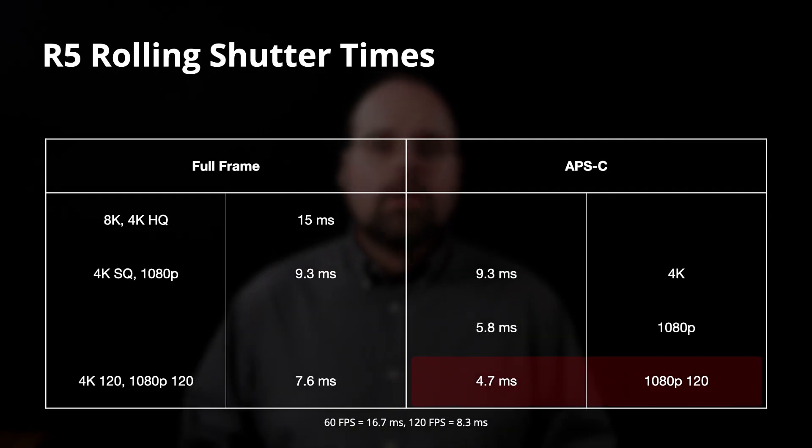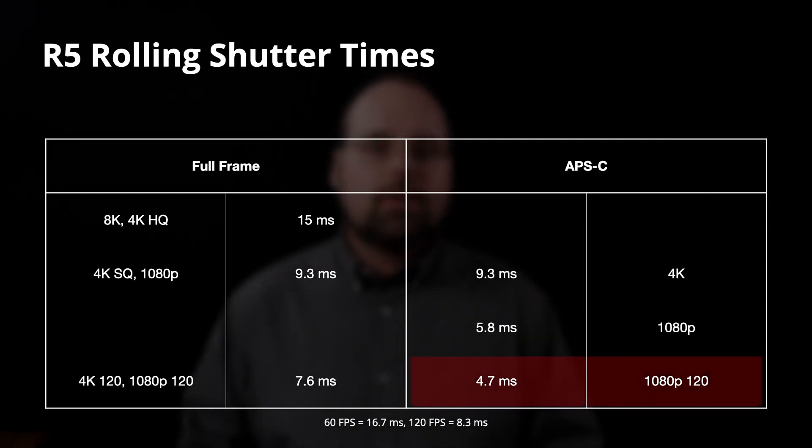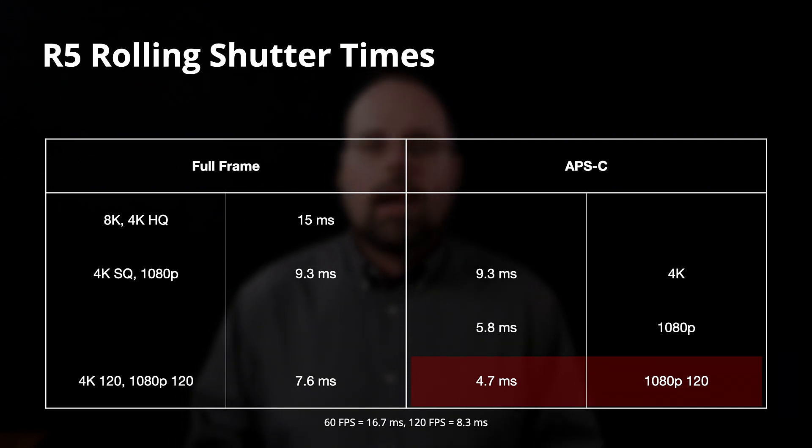7.6 milliseconds is clearly faster than 4K standard quality and is about half of what you'd expect from the full resolution readout. Why doesn't Canon do that for 4K standard quality and 1080p normal frame rates? Again, I think it comes down to power consumption or image quality. Dropping to APS-C, there's also a 120fps mode though resolution is limited to 1080p. In that setup, the camera's rolling shutter time is 4.7 milliseconds — so the best rolling shutter performance you can get is 1080p 120 in APS-C mode.